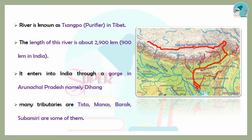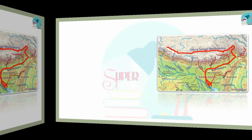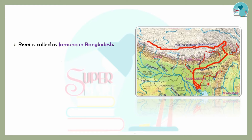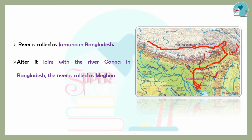The Brahmaputra's main tributaries include Manas, Barak, and Subansiri. In Bangladesh, the Brahmaputra is known as the Jamuna. When the Brahmaputra joins the Ganga, they form the Sundarbans delta. The combined river is also known as the Meghna. In Tibet, it is called Tsangpo, and it drains into the Bay of Bengal.